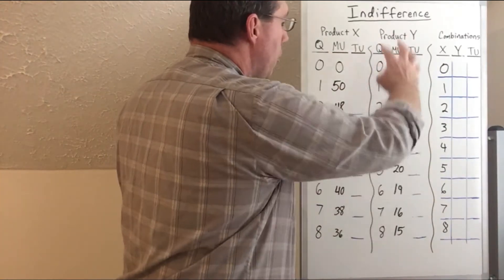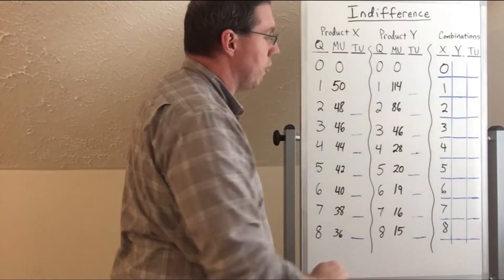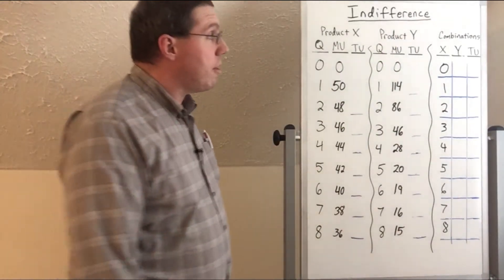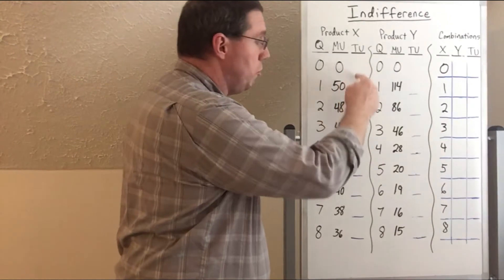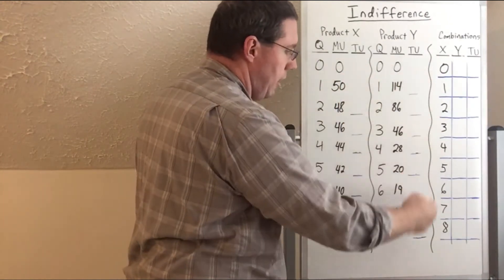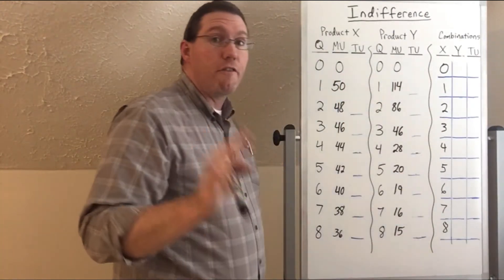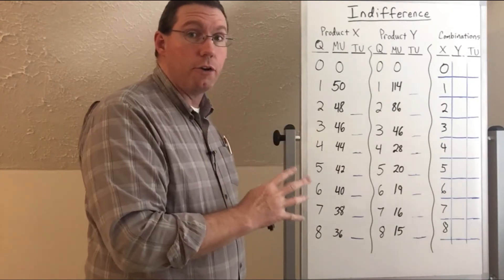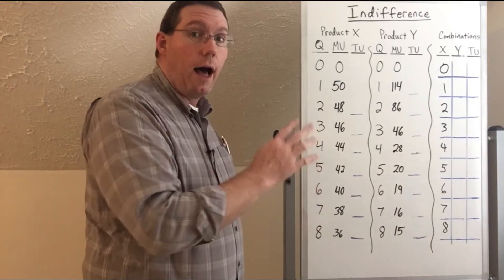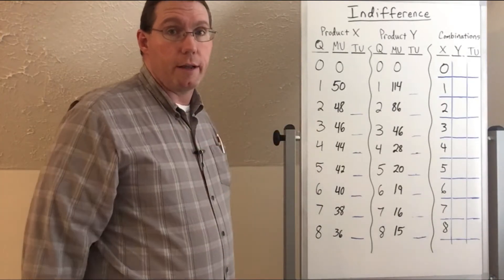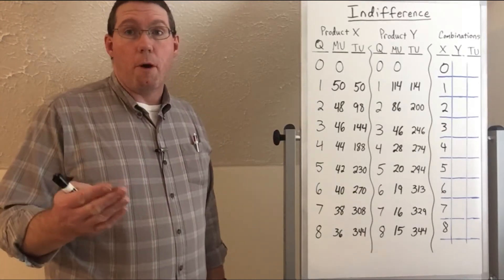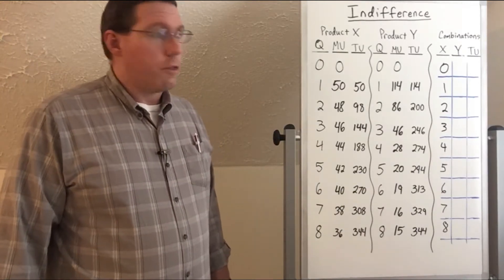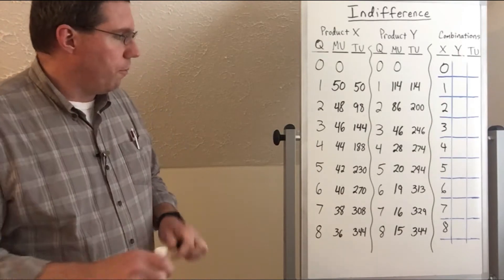So we have two products, both under the law of diminishing marginal utility. What we need to do now is fill in the total utility column — I'd like you to pause the video and fill that in on your notes. I'll go ahead and fill it in so you can check your answers.